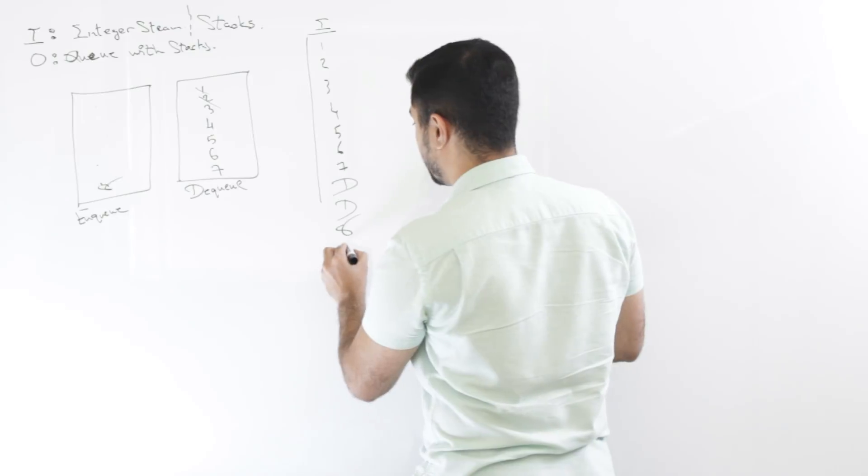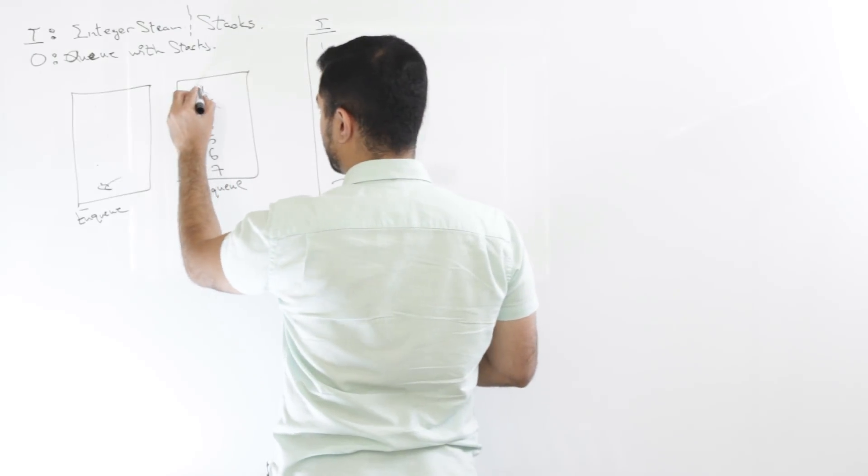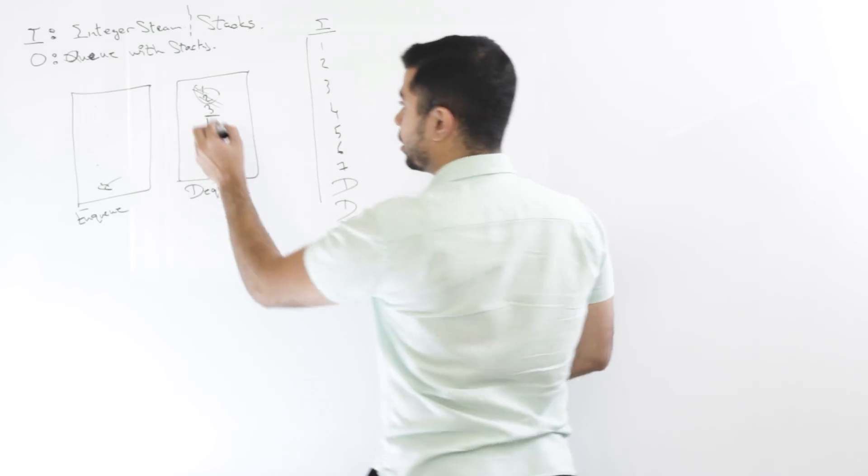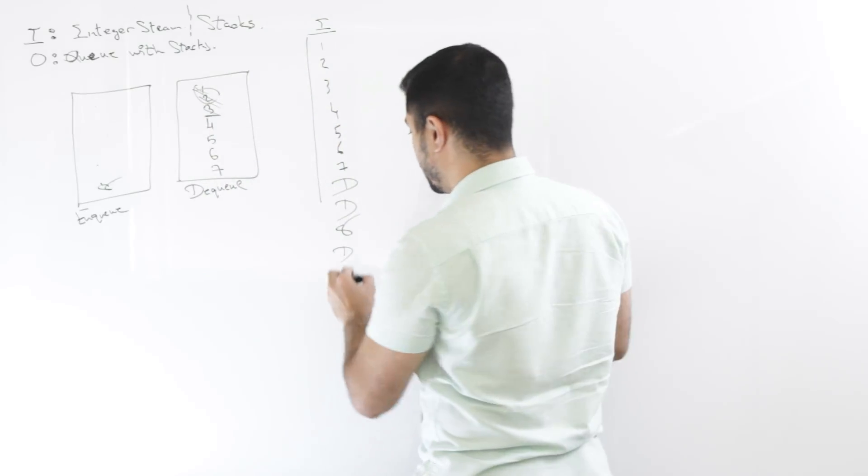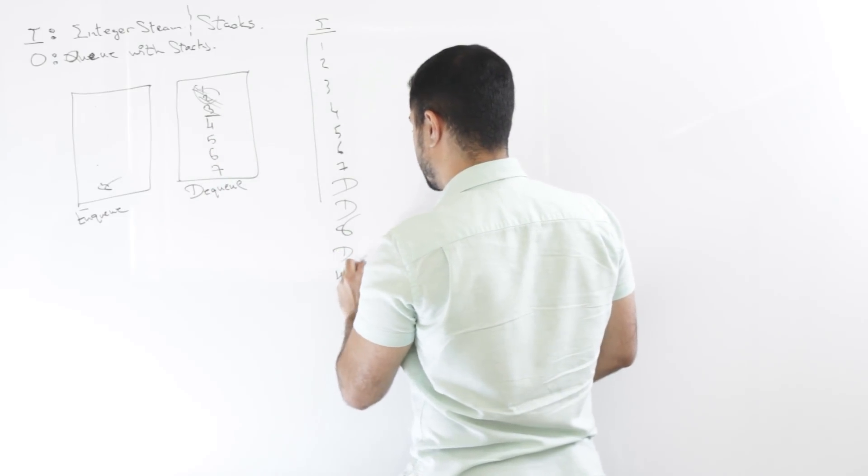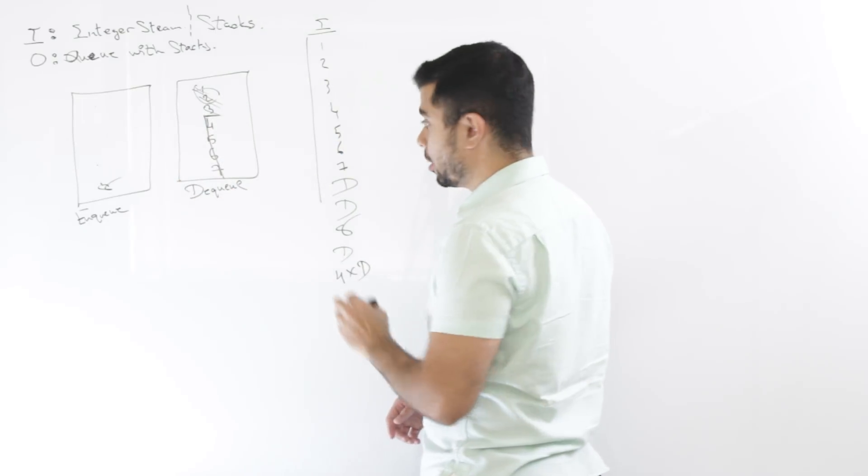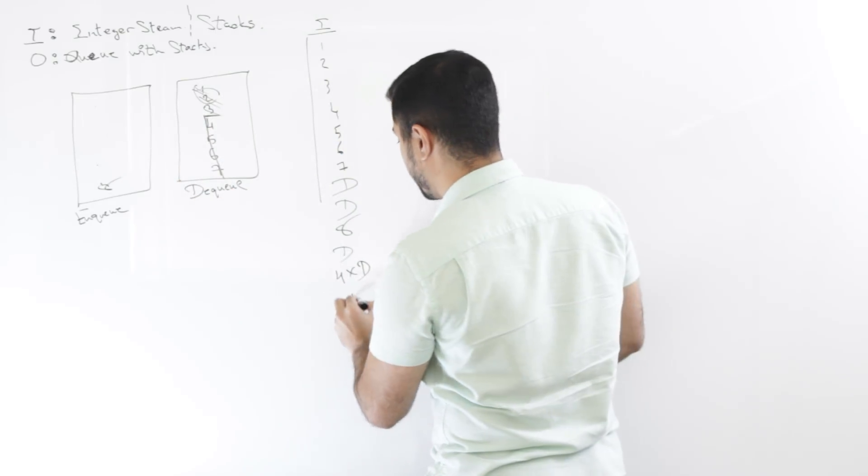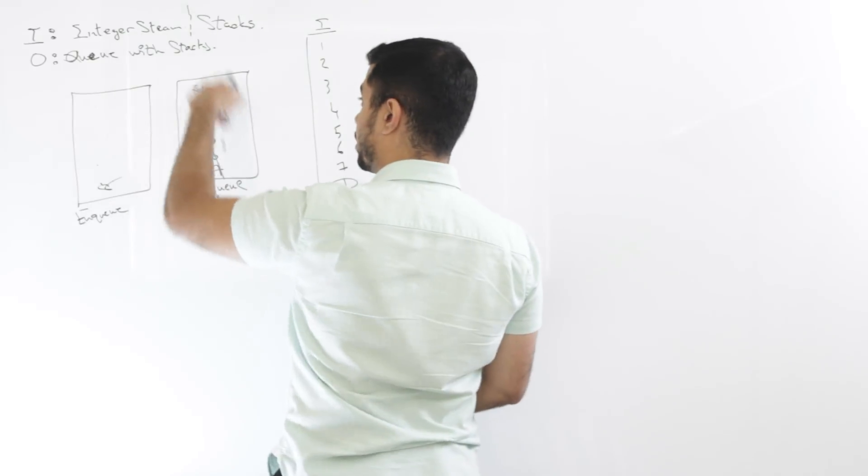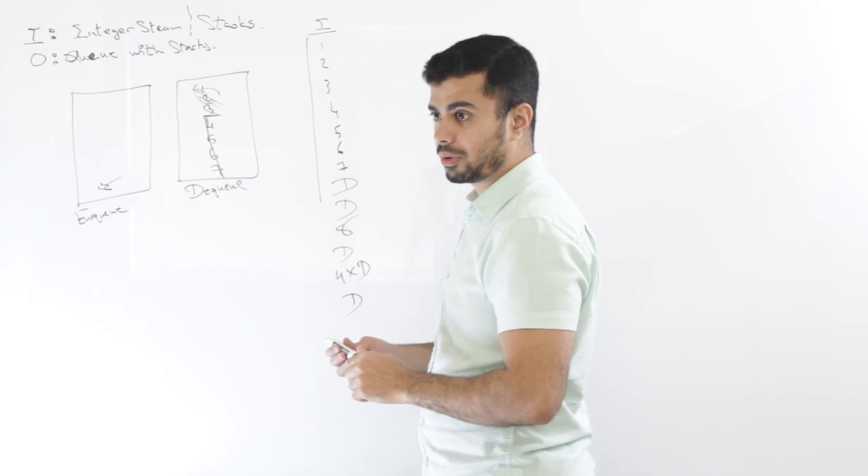And if I want, and then let's say there's a dequeue again. Then I dequeued one and two. So these two don't exist anymore. And then the top of the stack is three. So I dequeue that. Let's say I have one, two, three, four, four more of these dequeues. So this whole thing goes away. So now if I have another dequeue, then I see, oh, this is empty. So I need to reverse this entire enqueue stack onto a dequeue stack again like we did before.